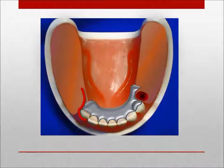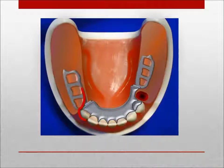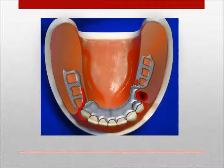Should the primary abutment fail, the partial has been designed to be easily repaired and returned to a state of serviceability, usually with same-day repair facilitated by an alginate pickup impression and a skilled dental laboratory technician. If care is used, minimal adjustment will be required to seat and adjust the partial denture.